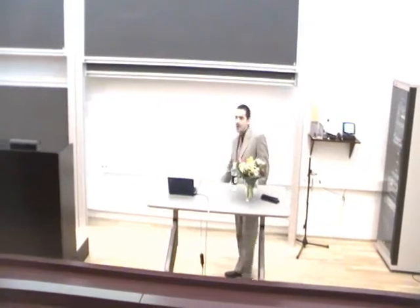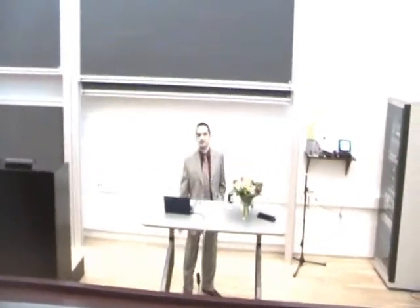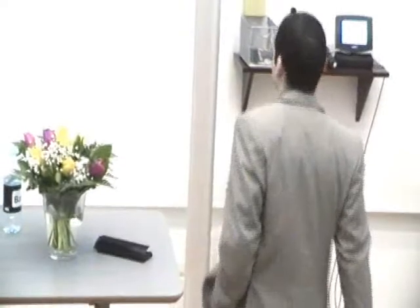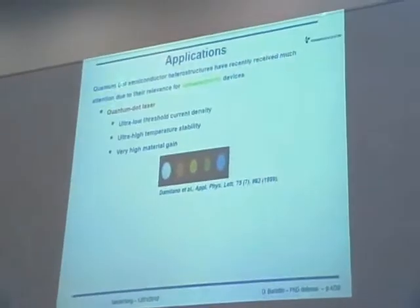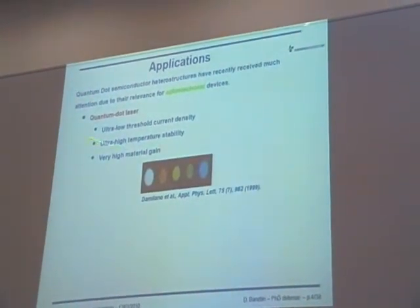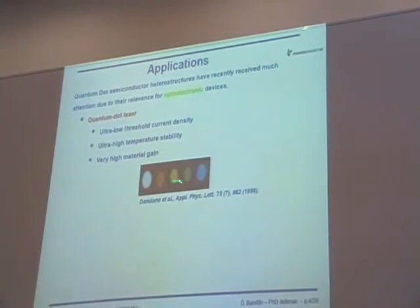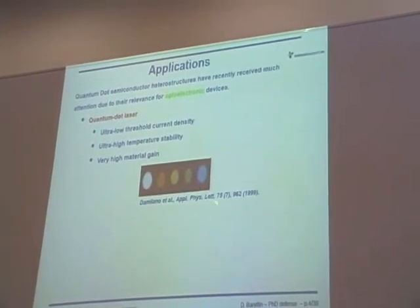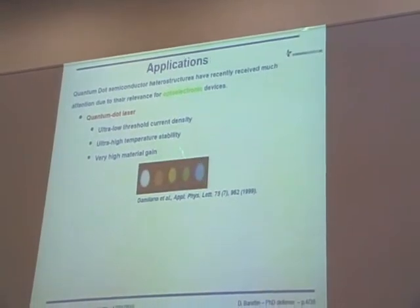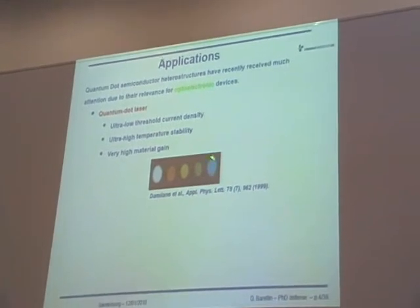Why are we so interested in studying quantum dot models? Because they seem to be very promising candidates for a new generation of optical and electronic devices. One application is the quantum dot laser, which has ultra-low threshold current density, ultra-high temperature stability, and very high material gain. Here you have a nice picture of a quantum dot laser based on gallium nitride / aluminium nitride quantum dots — just by changing the shape and size of the dots, you can obtain different colors of emitted light.